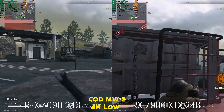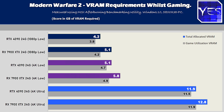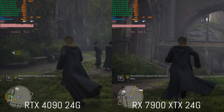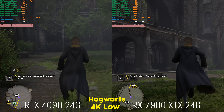At 4K low settings on both AMD and NVIDIA, six gigabytes of VRAM will cut it for both architectures. Then when we step up to ultra settings with high textures, VRAM utilization can go all the way up to roughly close to 12 gigabytes. On the AMD side that went up to 11.9 gigabytes actual utilization, meaning if you want to play 4K ultra settings on Modern Warfare 2, you're going to need at least 12 gigabytes of VRAM.